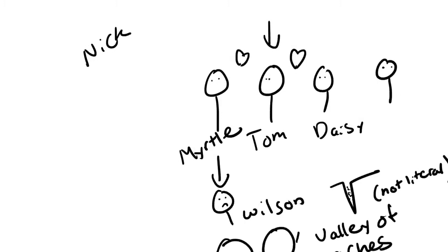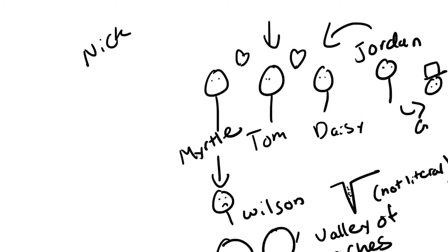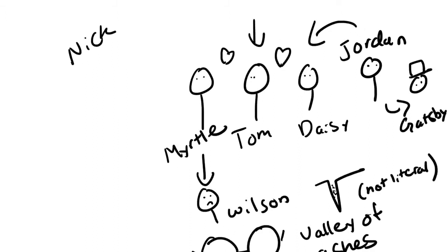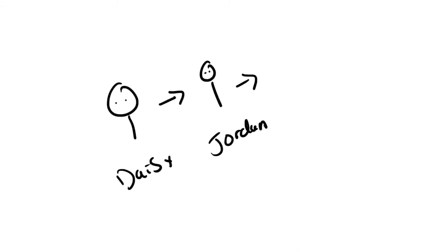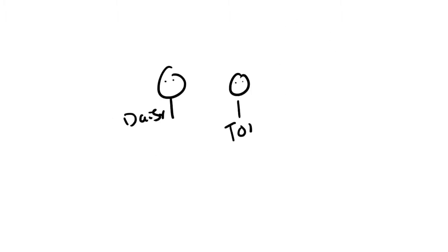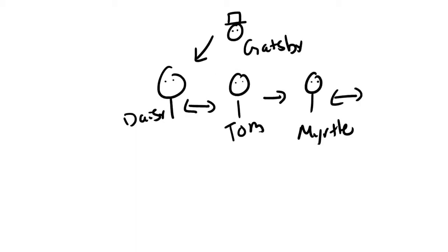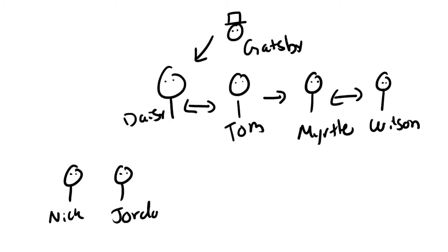Shortly after Nick attends one of Gatsby's parties, we learn about Gatsby's past from Jordan, who was introduced at the beginning and is a friend of both Tom and Daisy, and also of Gatsby. Daisy tells Jordan, who tells Nick, about Gatsby's past. So at this point, we have the entire love web: Daisy is married to Tom, but Gatsby also loves Daisy; Tom loves Myrtle, but Myrtle is married to Wilson. And then we have Nick and Jordan, just watching this giant love story unfold.